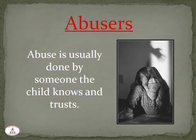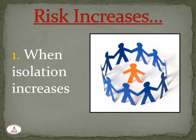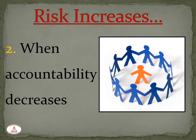Abuse is usually done by someone the child knows and trusts and who has access to the child. It is most often a parent or relative, but can also involve both acquaintances and occasionally strangers. The risk for abuse increases when children are alone somewhere and an abuser takes advantage of the situation. Taking a single child into a bathroom, for instance, is risky. Any setting involving an adult alone with a child, away from others, is risky. If no one is taking responsibility for the actions of those supervising children and making sure that policies regarding supervision are followed, there is greater risk for abuse to occur.